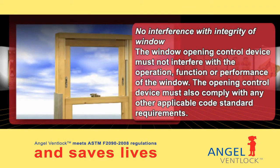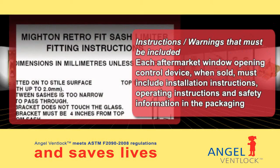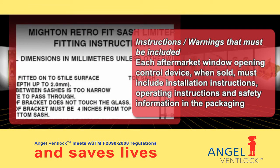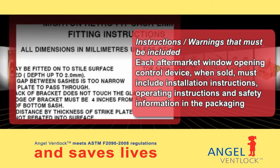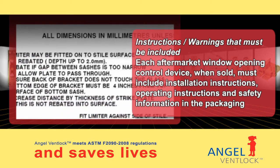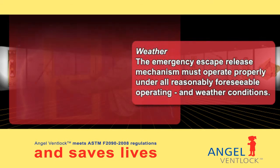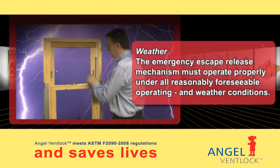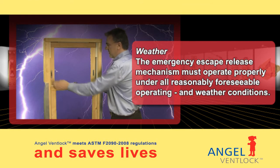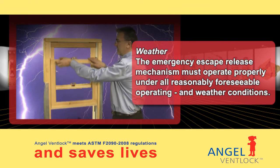The window opening control device must not interfere with the operation, function or performance of the window, and must also comply with any other applicable code standard requirements. Each aftermarket window opening control device, when sold, must include installation instructions, operating instructions and safety information in the packaging. The emergency escape release mechanism must operate properly under all reasonably foreseeable operating and weather conditions.